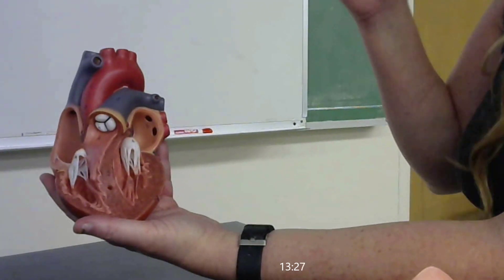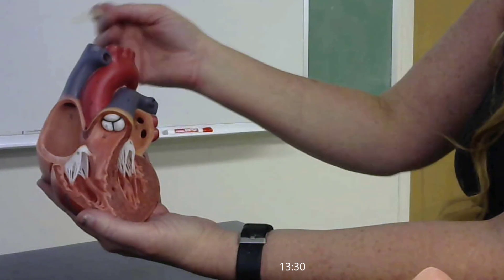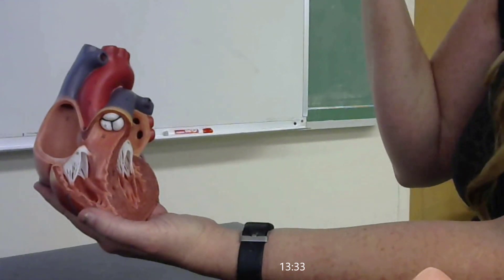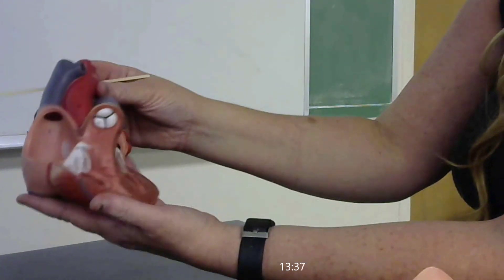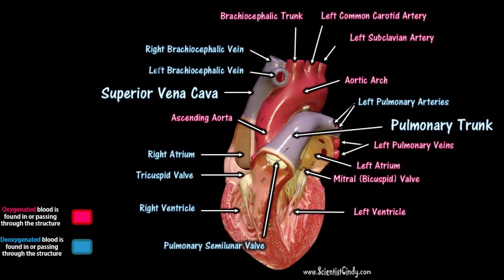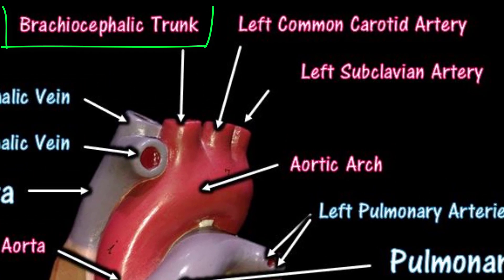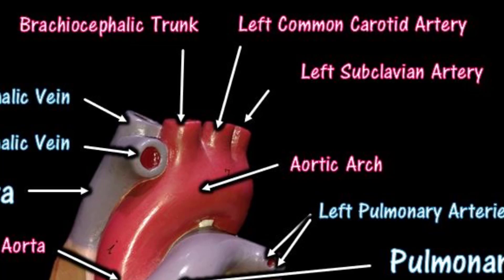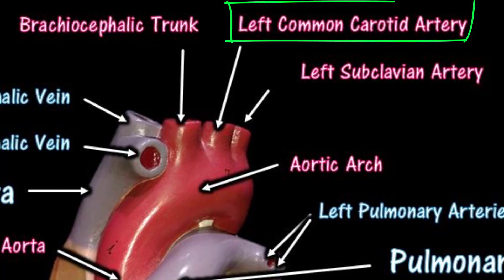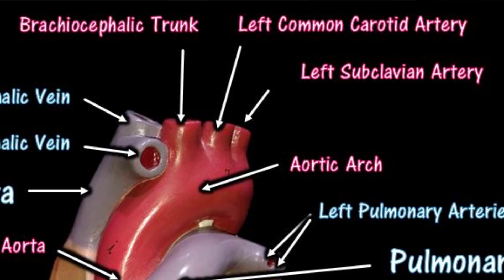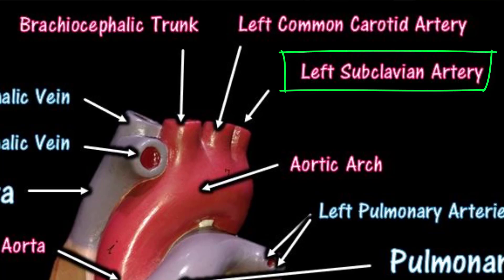The superior branches coming off the aortic arch bring blood to the upper portions of the body. The first branch is the brachiocephalic trunk, which bifurcates into the right common carotid artery and the right subclavian artery. The second branch is the left common carotid artery, and the third and final branch is the left subclavian artery.